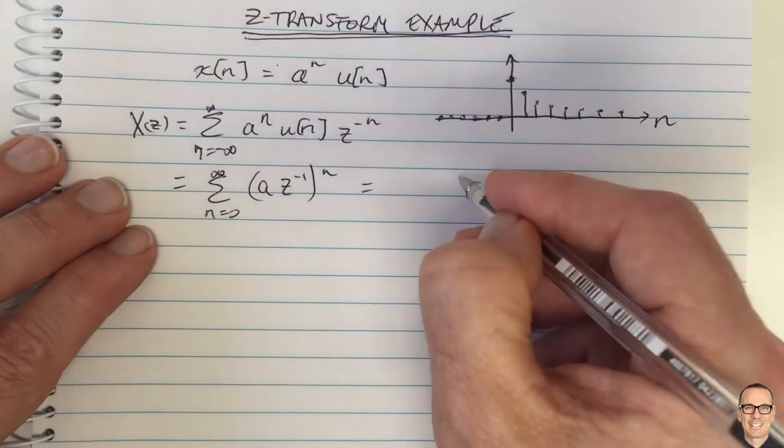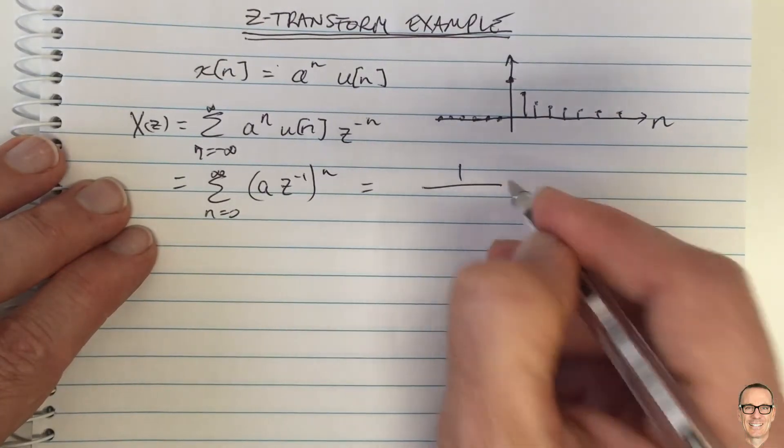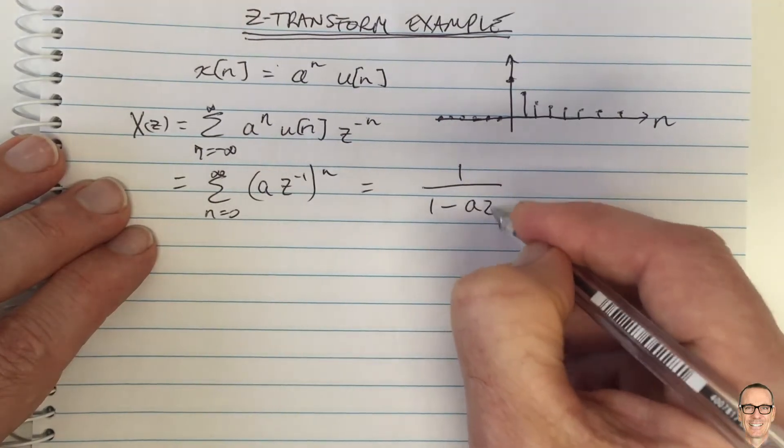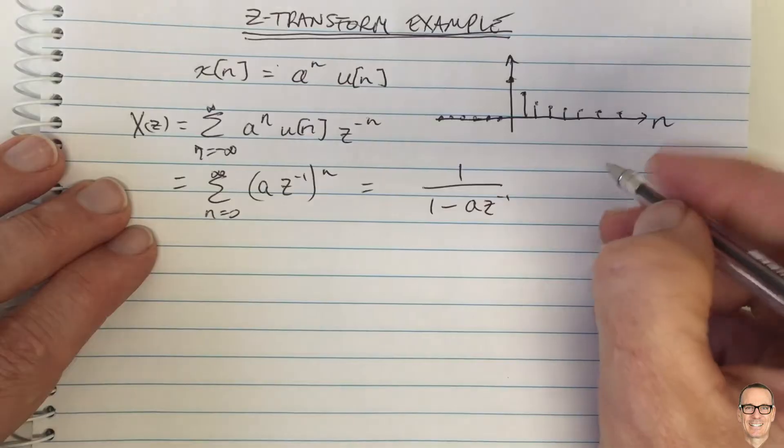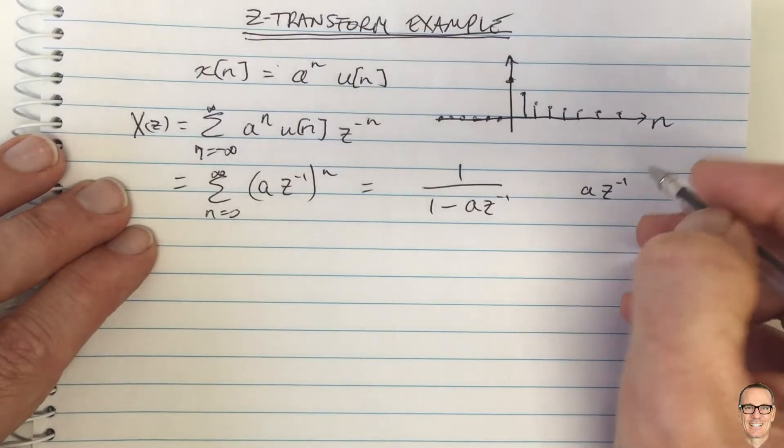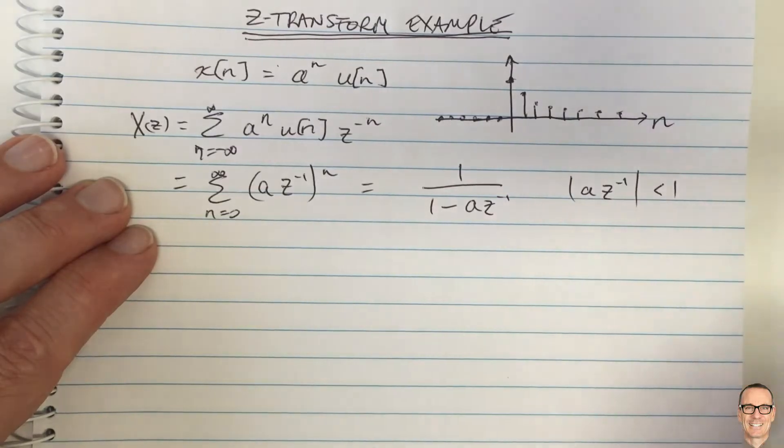And this equals, it's an expression that can be looked up, that summation is 1 over 1 minus a times Z to the minus 1, as long as the mod of a Z to the minus 1 is less than 1.